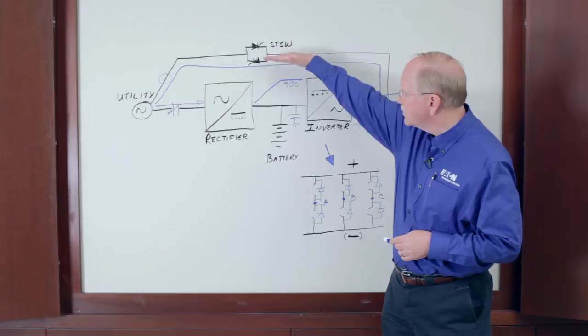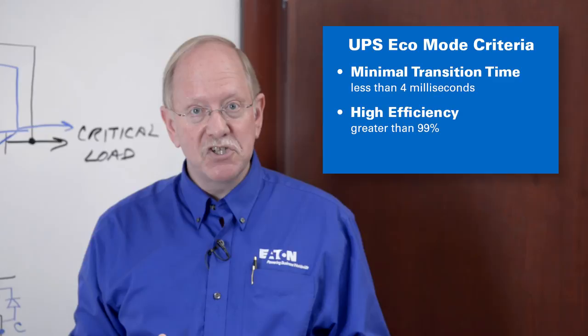So, if you're considering using eco mode on your UPS, there's three criteria that should be important. The first one is transition time. The time it takes from static switch operation to traditional double conversion should be less than four milliseconds, ideally less than two milliseconds, or two one-thousandths of a second.